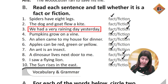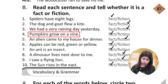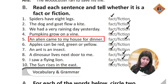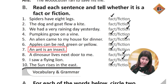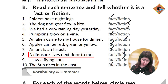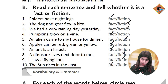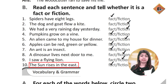We had a very rainy day yesterday — Fiction. Pumpkins grow on a vine — Fact. An alien came to my house for dinner — Fiction. Apples can be red, green, or yellow — Fact. An ant is an insect — Fact. A dinosaur lived next to me — Fiction. I saw a flying lion — Fiction. The sun rises in the east — Fact.